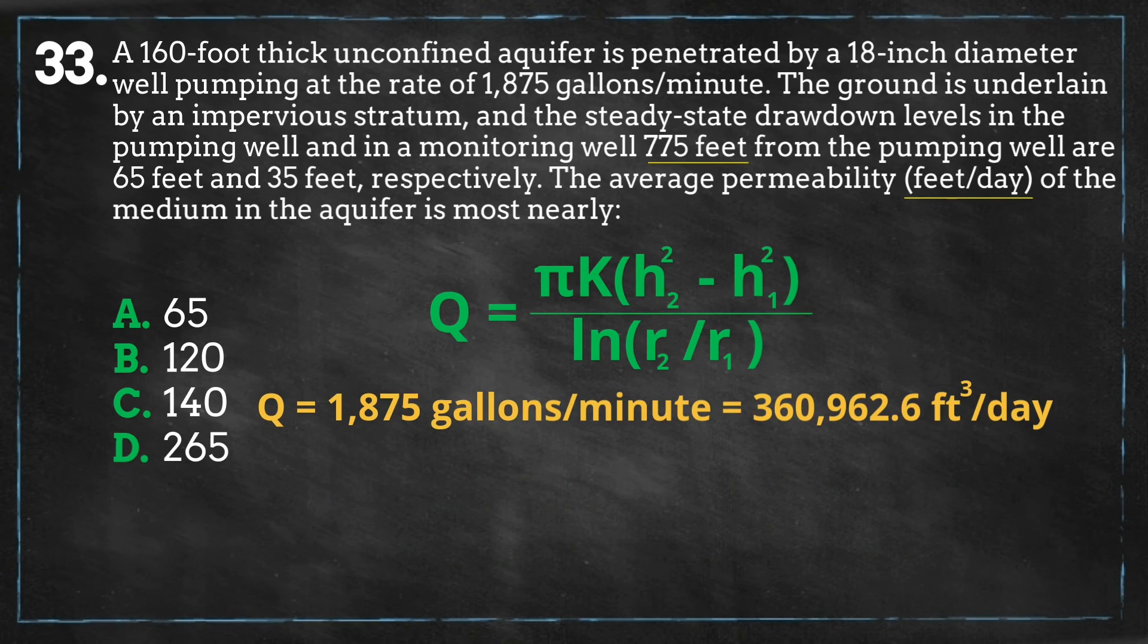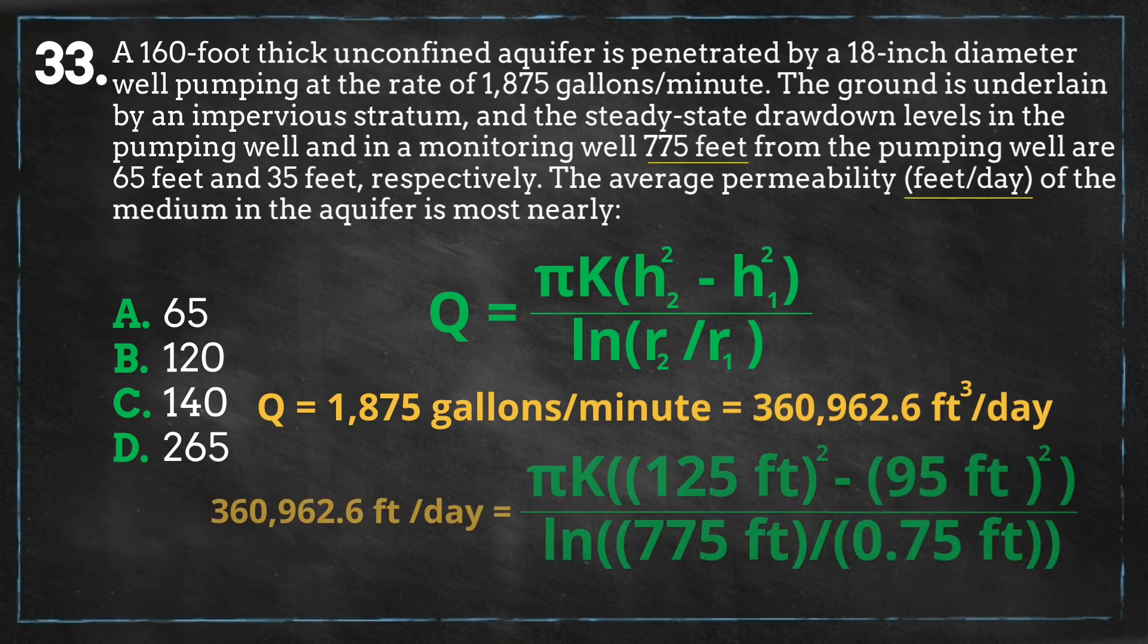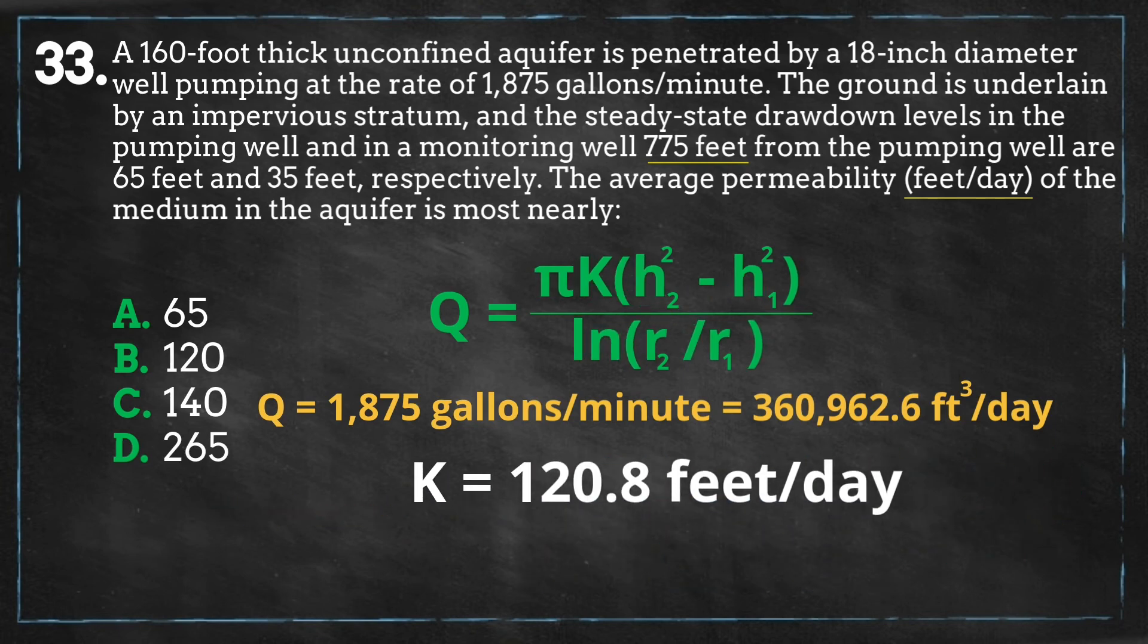We can now plug our data into this equation, and we get the following. We can solve for k, and we get 120.8 feet per day, which is closest to B.